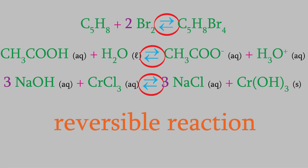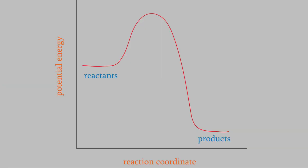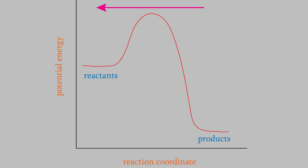You can understand why if you think about our discussion of activation energy from the last video. If the reaction is going in the usual direction, from left to right, this is the activation energy. But if the reaction runs in reverse, the reaction will have a different activation energy to overcome. So the reaction is still possible in the reverse direction, and that's the case for lots of different reactions.